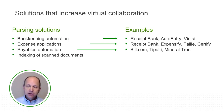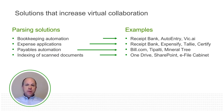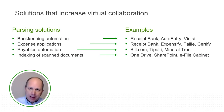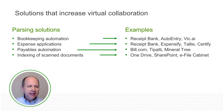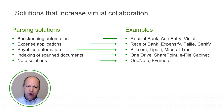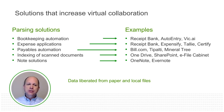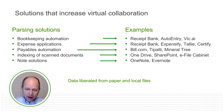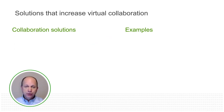Indexing of scanned documents: scan it in and place it into a storage container. At least it's been liberated and you can search on it — through optical character recognition combined with parsing. OneDrive, SharePoint, eFileCabinet, and a wide range of others will do that. Then there are note solutions that parse data, like OneNote and Evernote. By using these solutions, you have liberated data from paper and local files.